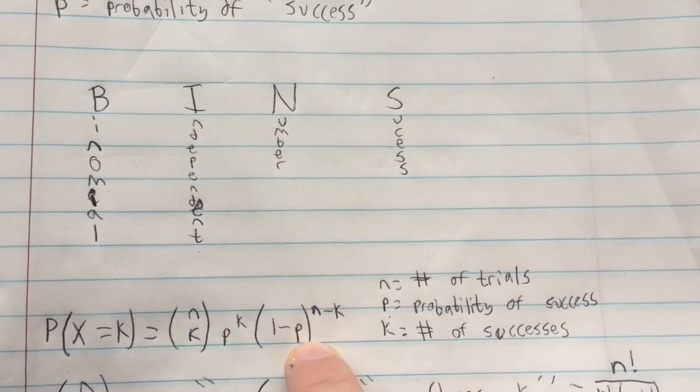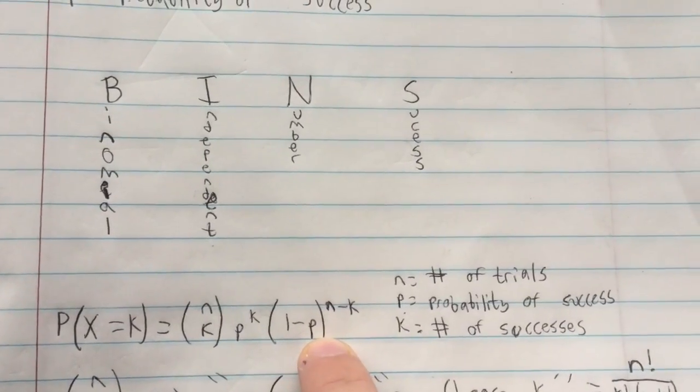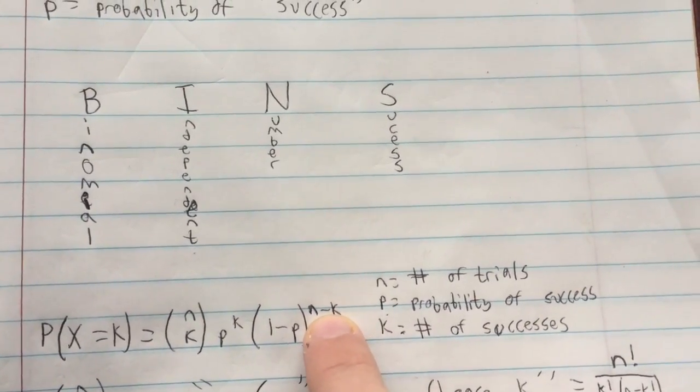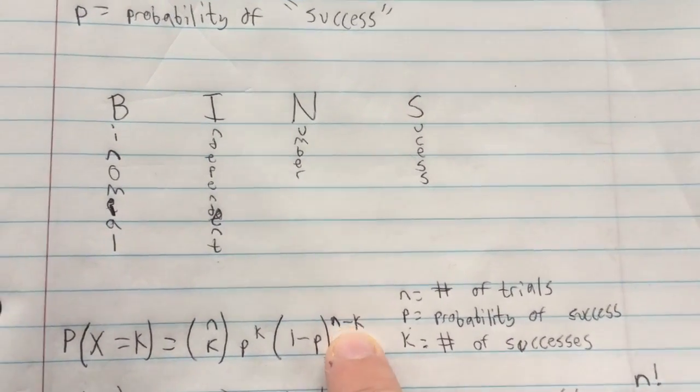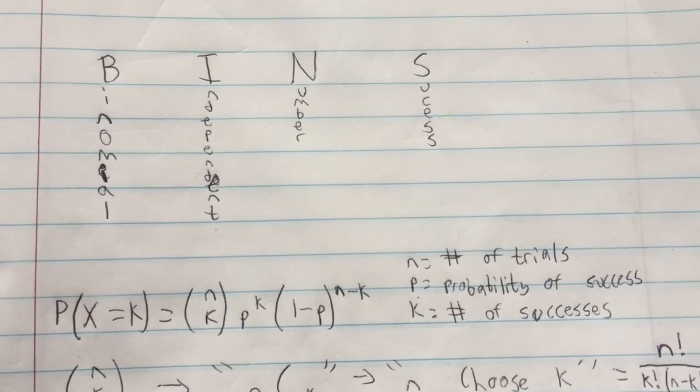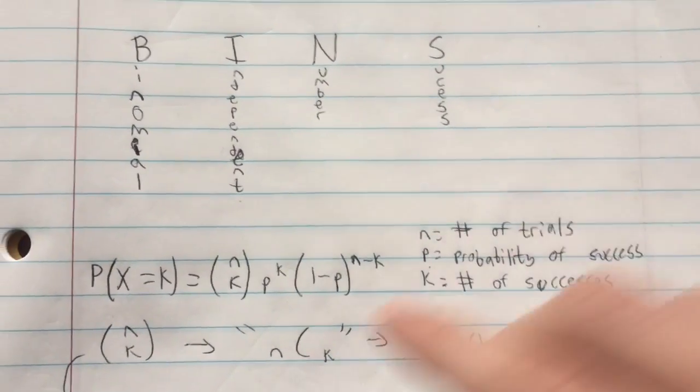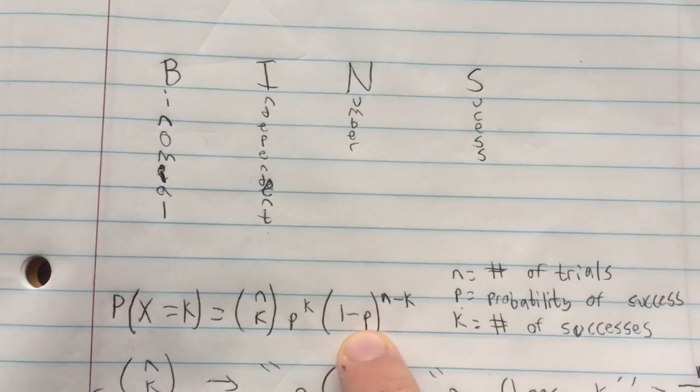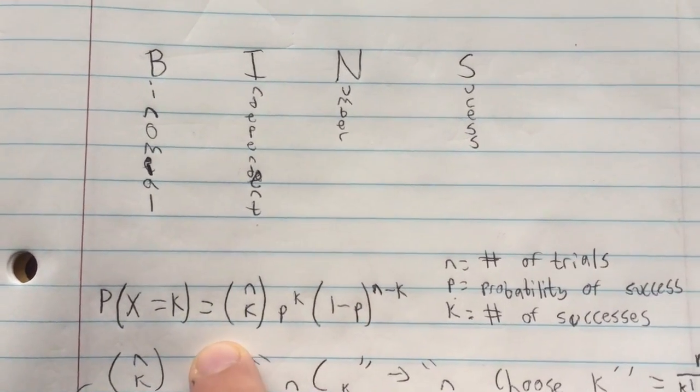Then times 1 minus the probability of success to the probability of failure. To the power of N minus K, which is basically the number of trials that are failures. So it's the probability of getting this many successes times the probability of getting this many failures times this constant.